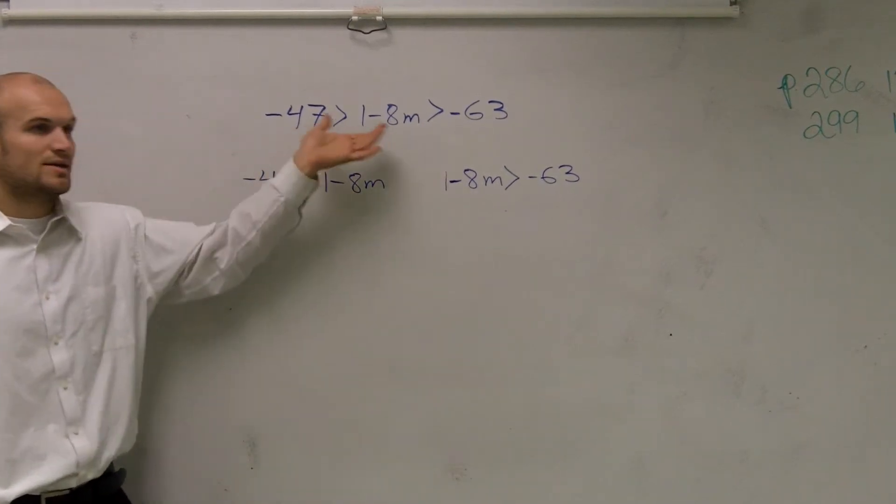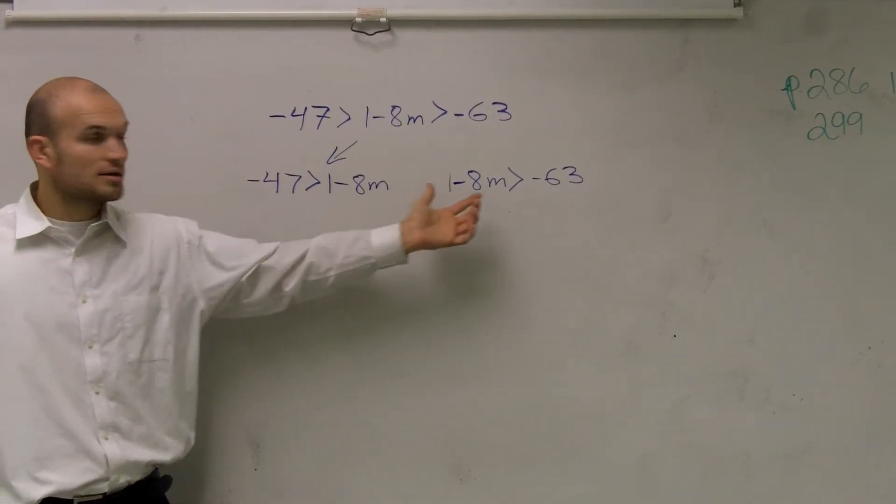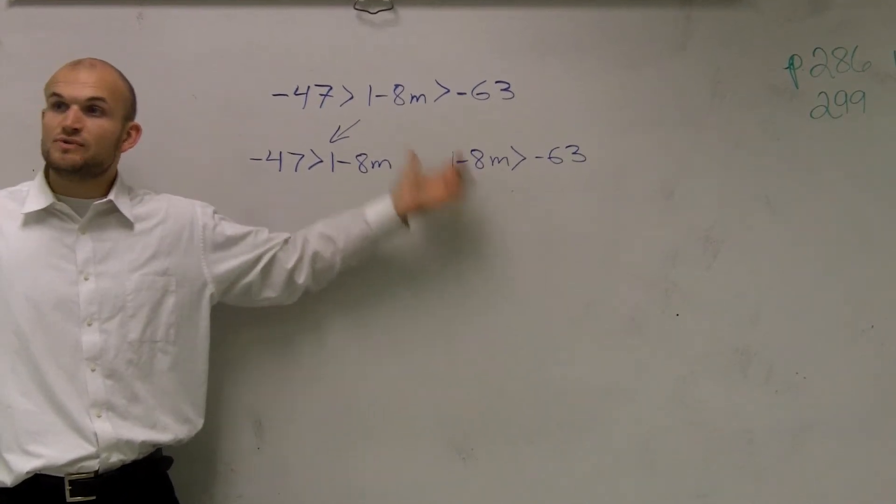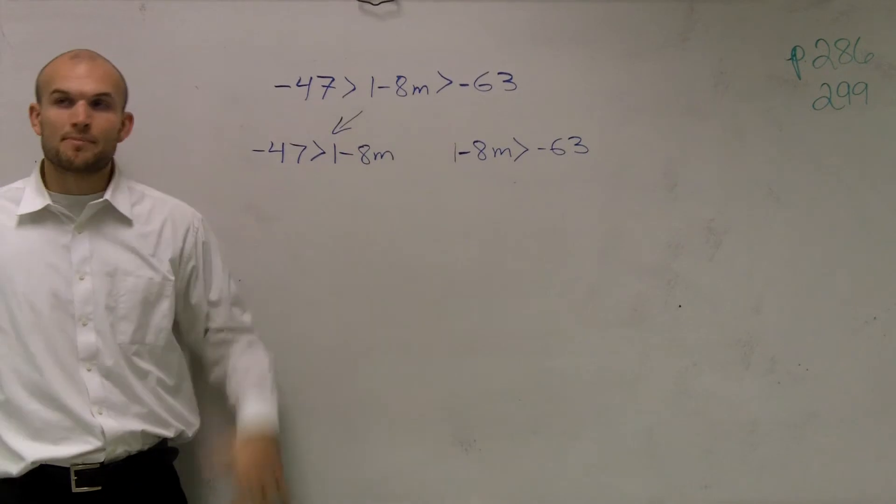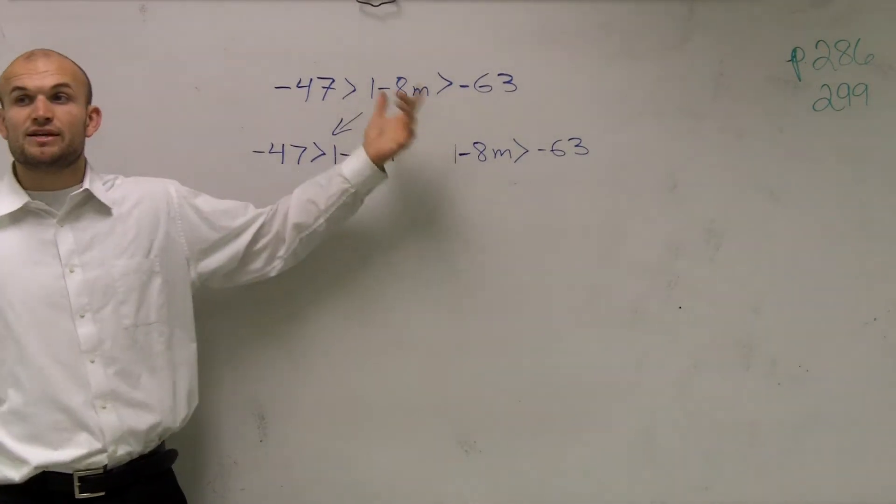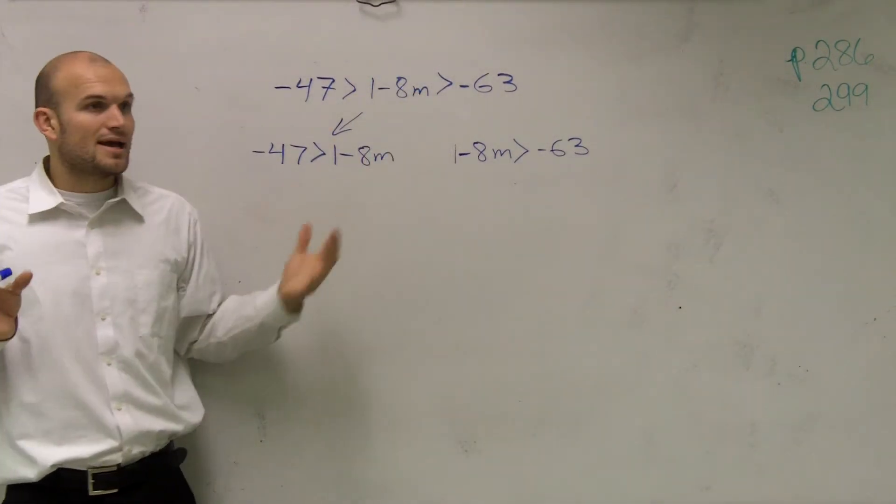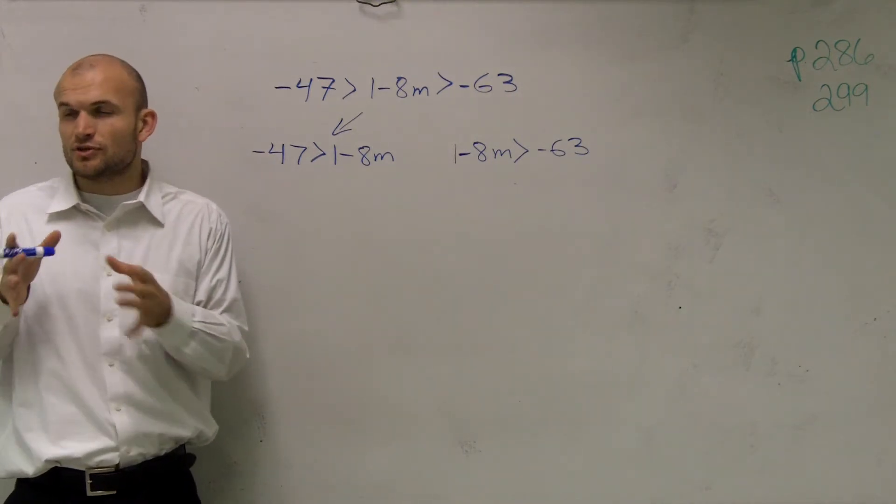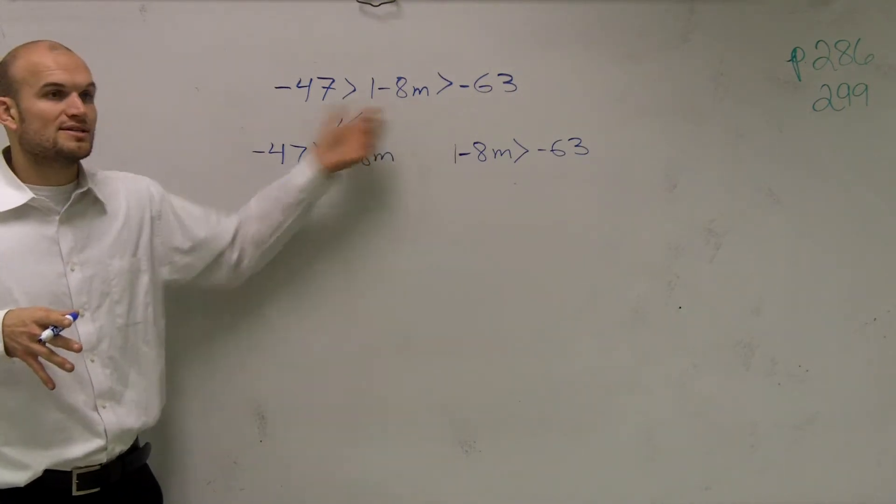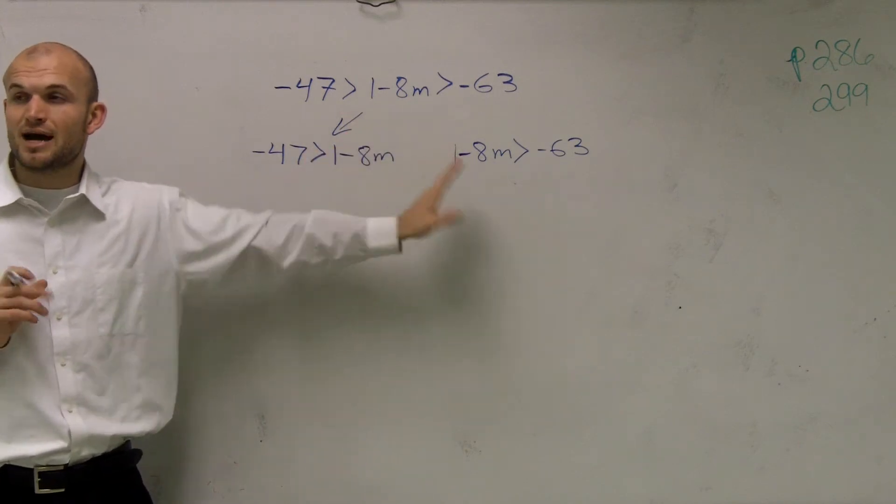So therefore, we either have this inequality or we have this. So what we've done is we've just separated our compound inequality. So this is the way we can write them together. And a lot of times, if you don't understand how to do them together and it confuses you, the next way I'm going to show you, you can always just separate it. So does anybody have any questions on how I separated it? Now, it's just like what we did for 1 through 5.